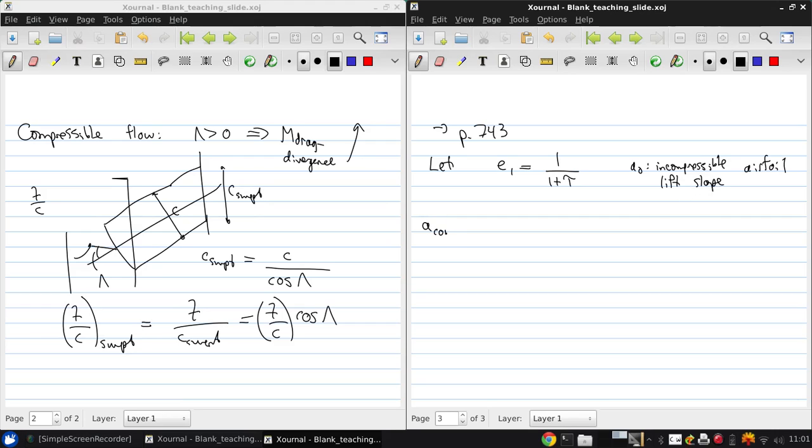So then for a high aspect ratio straight wing, we essentially add a Prandtl-Glauert factor. So this is high AR, straight, compressible but subsonic.